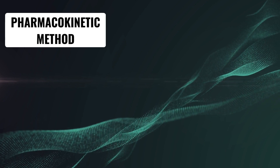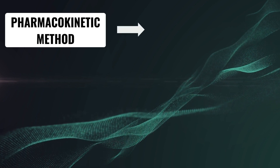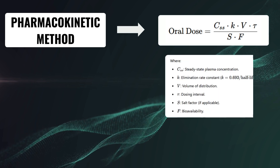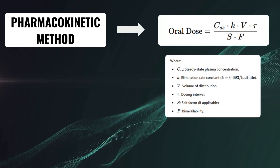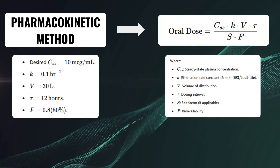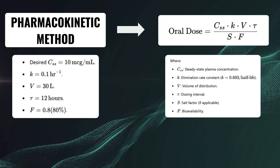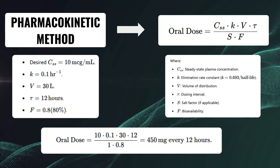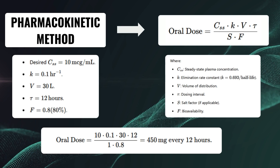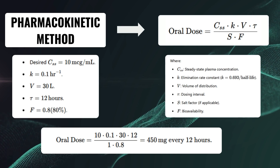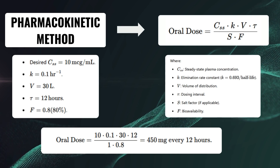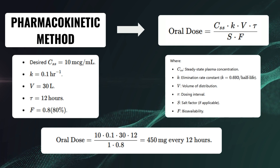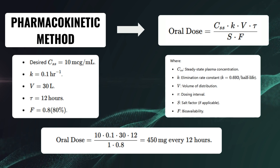Now let's see the pharmacokinetic method. This is the formula for that. We need to calculate all the required parameters and apply them to the formula — for example, yielding 450 mg of the drug every 12 hours. This method is generally used for narrow therapeutic index drugs in critical conditions to obtain the most accurate doses.